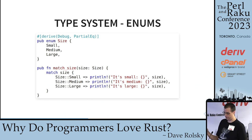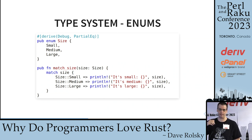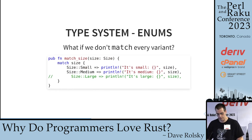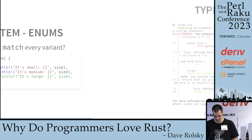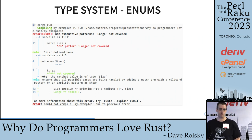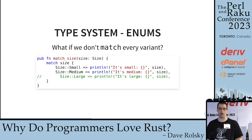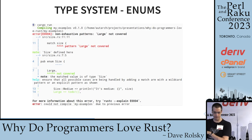The type system has enums. Here's a trivial one — just three possible values for size. The 'derive' bit is a macro that implements some built-in traits, so Debug lets you pretty print it. You can also see the pattern matching — we match on size and check all the different sizes. But what if we didn't match every variant? If we comment out matching size large, Rust doesn't like that. It says 'pattern large not covered' and even gives a suggestion of how to cover it. I can't just not match all the sizes — I have to handle all the cases.